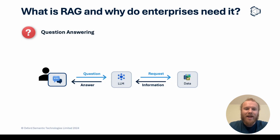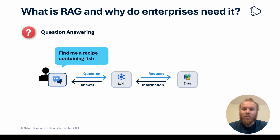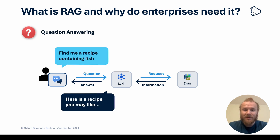But first, what is RAG and why do enterprises need it? RAG, or Retrieval Augmented Generation, provides an LLM interface to a database. This allows users to take advantage of all of the benefits of LLMs while anchoring their answers in company-owned data, providing accuracy, reliability, and trust to the powerful flexible interface.